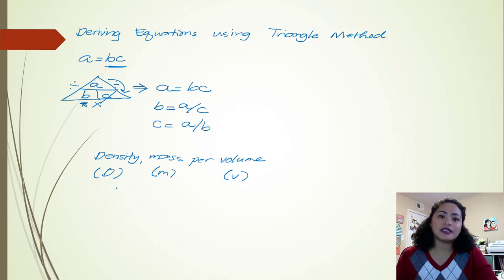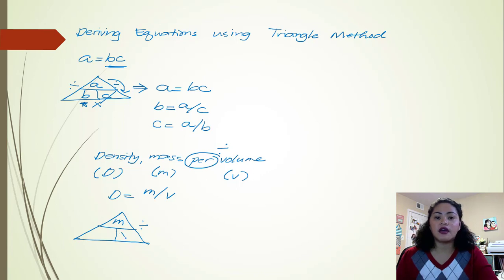So here it says density is equal to mass per volume. So the per here means division. So that is mass divided by volume. So if we are going to apply the triangle method here, so how do we put the letters in the triangle divided again by three, since we have three variables, so you can have M over V. So that means M is on top. M over V. And then the remaining part is for our remaining variable, which is this density.